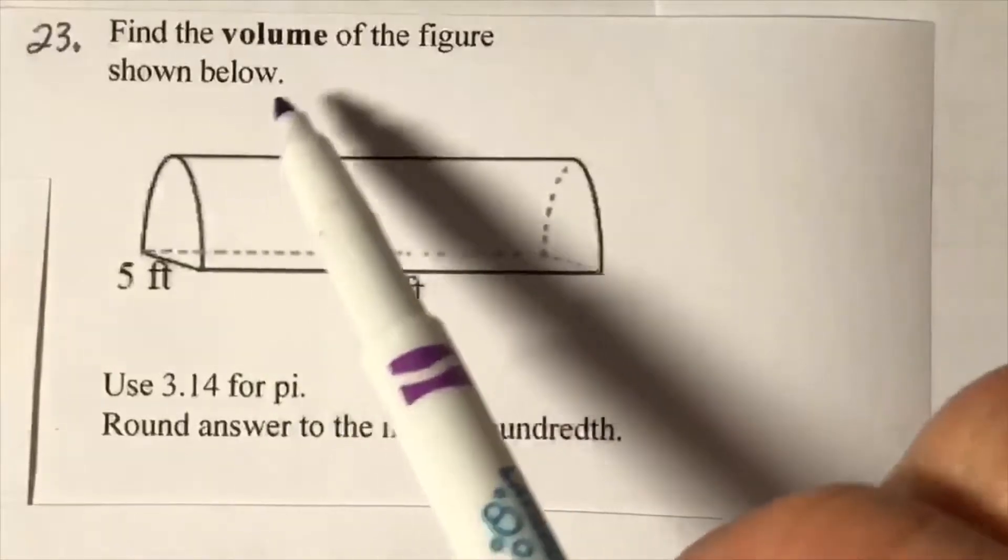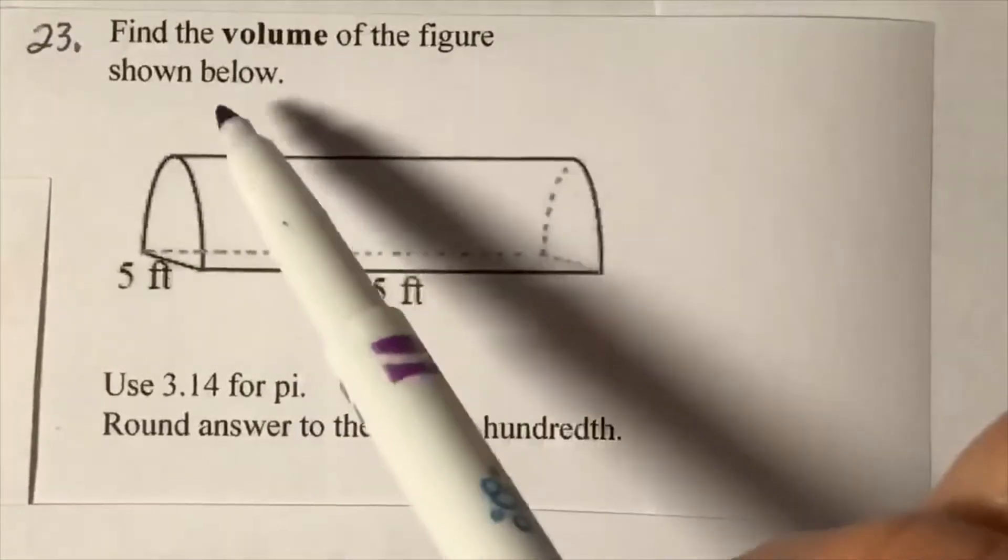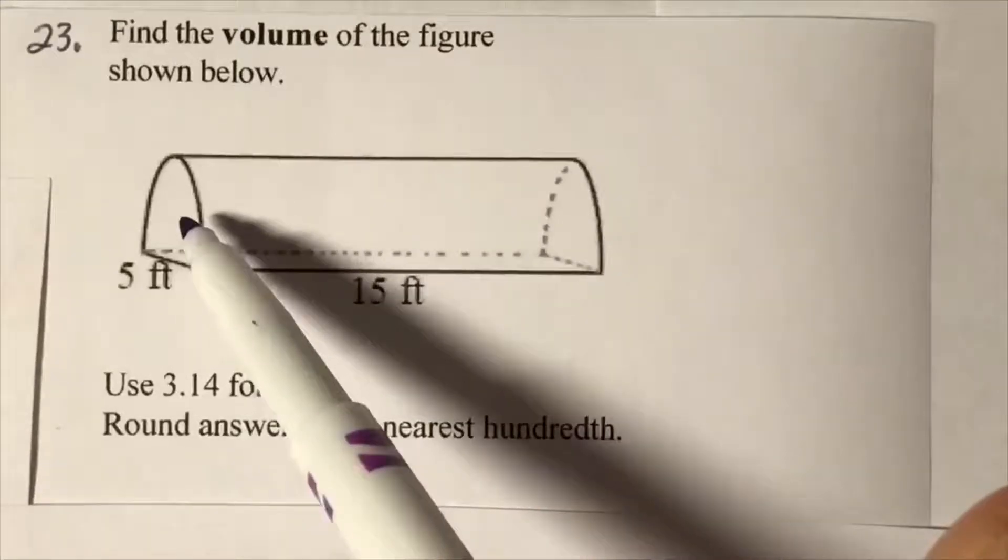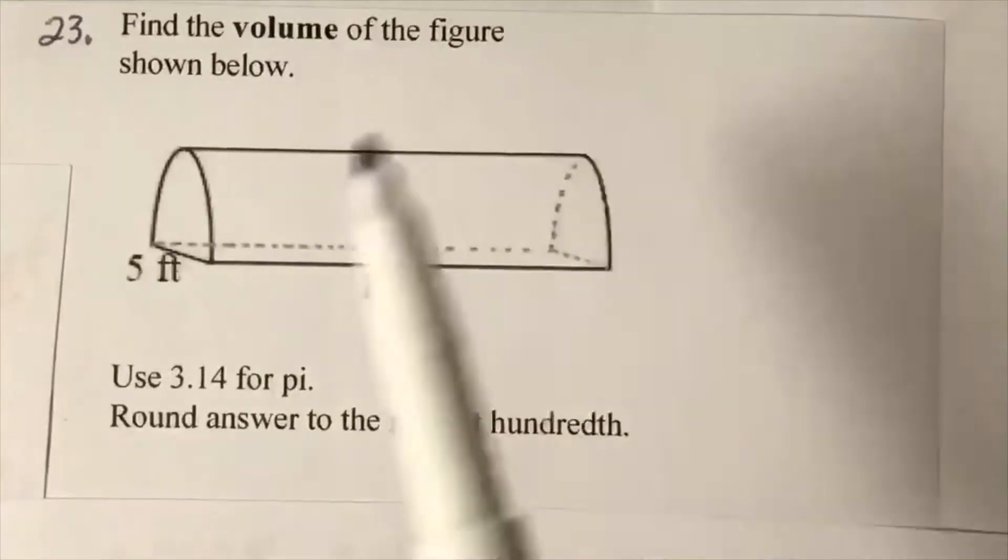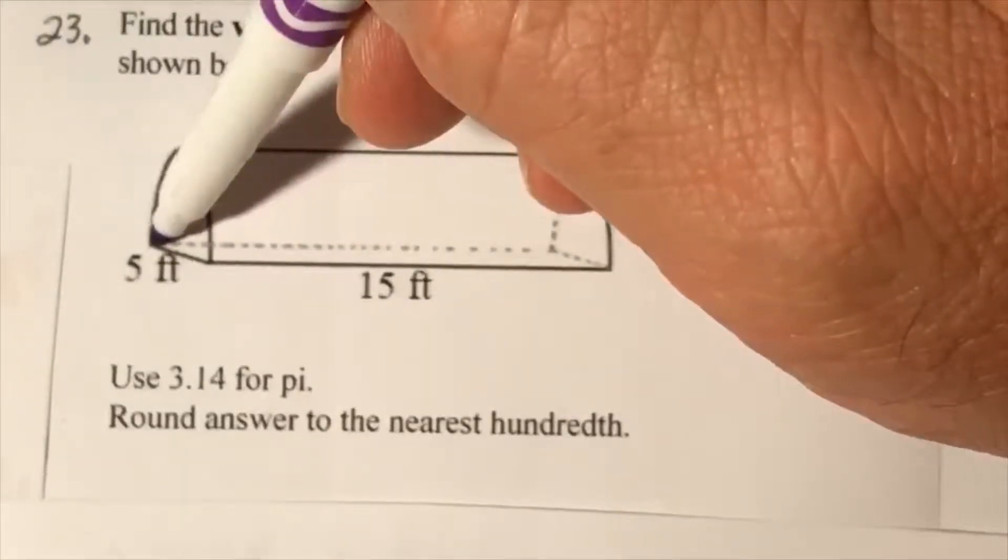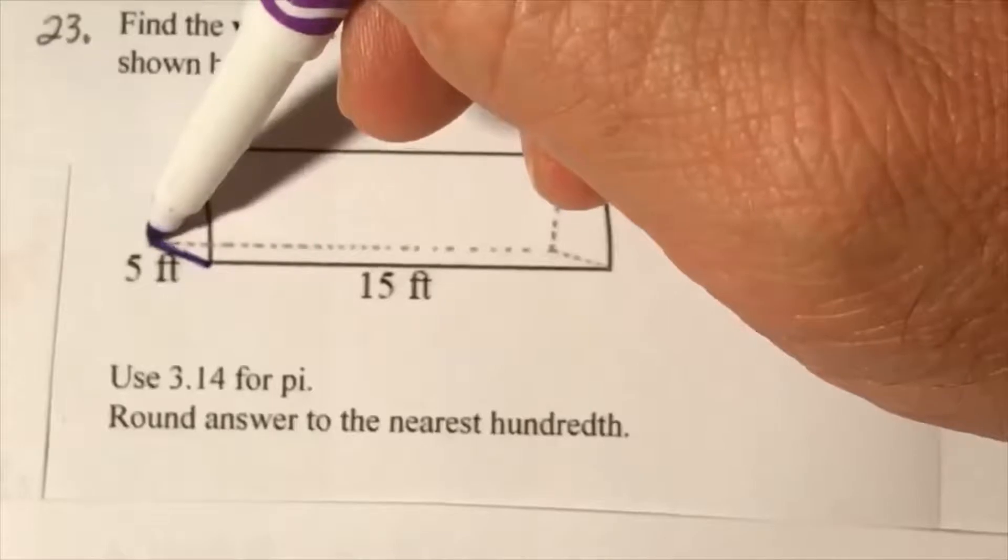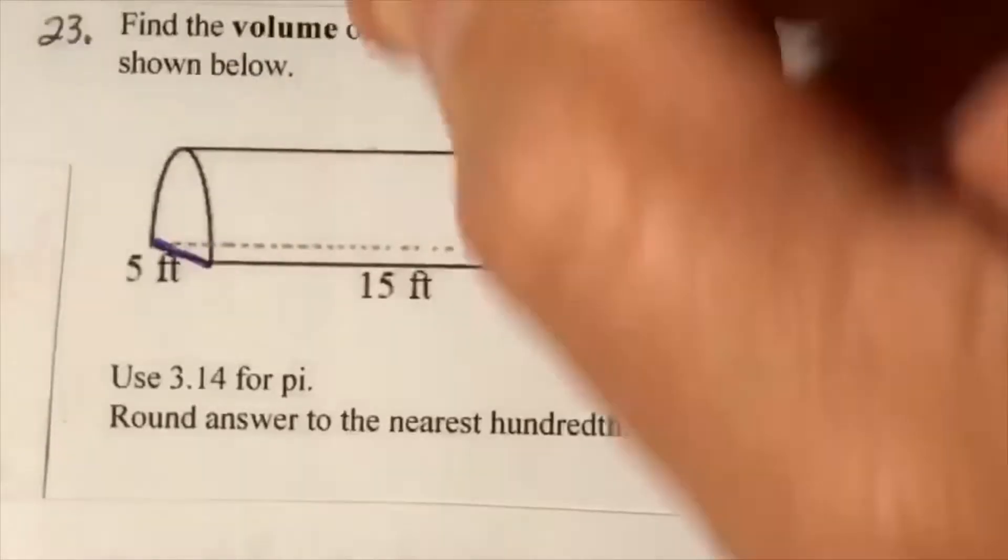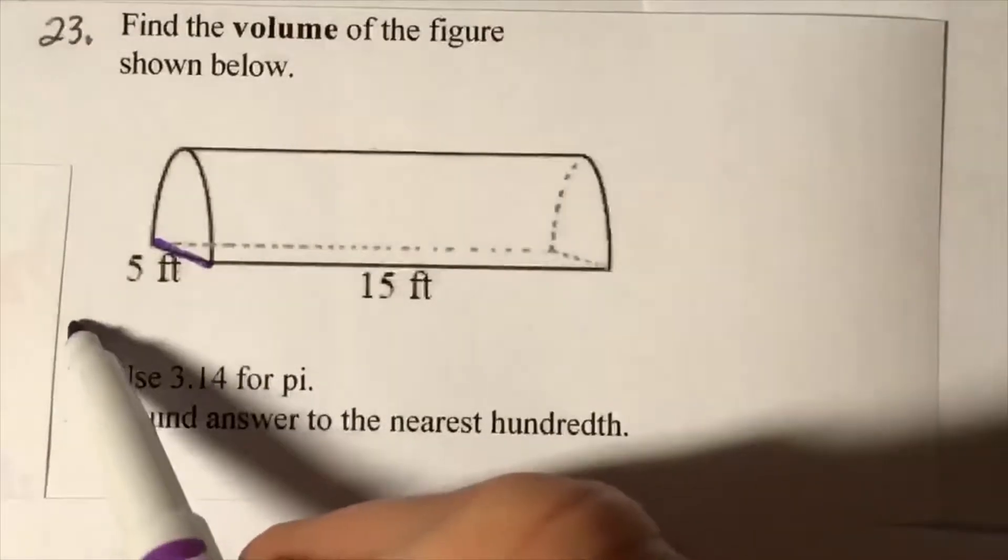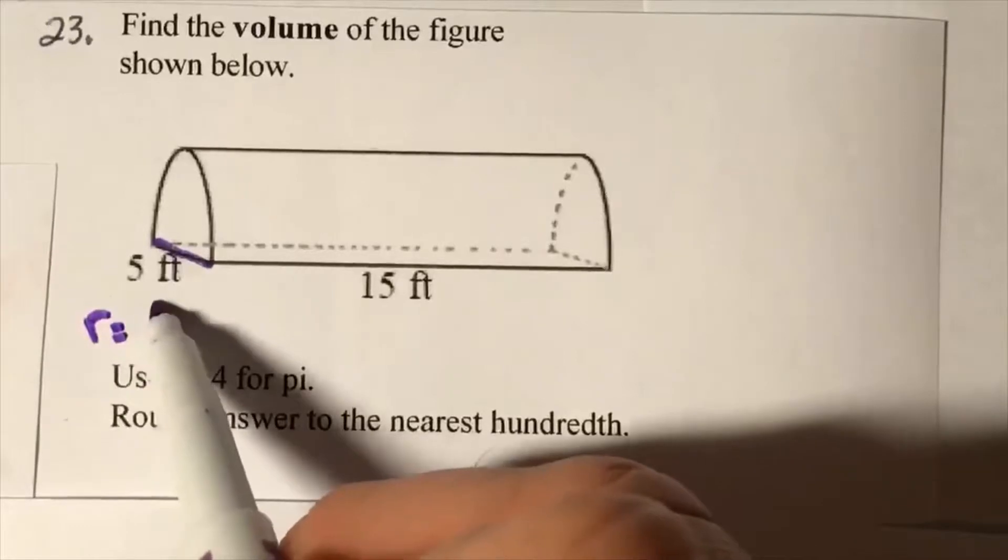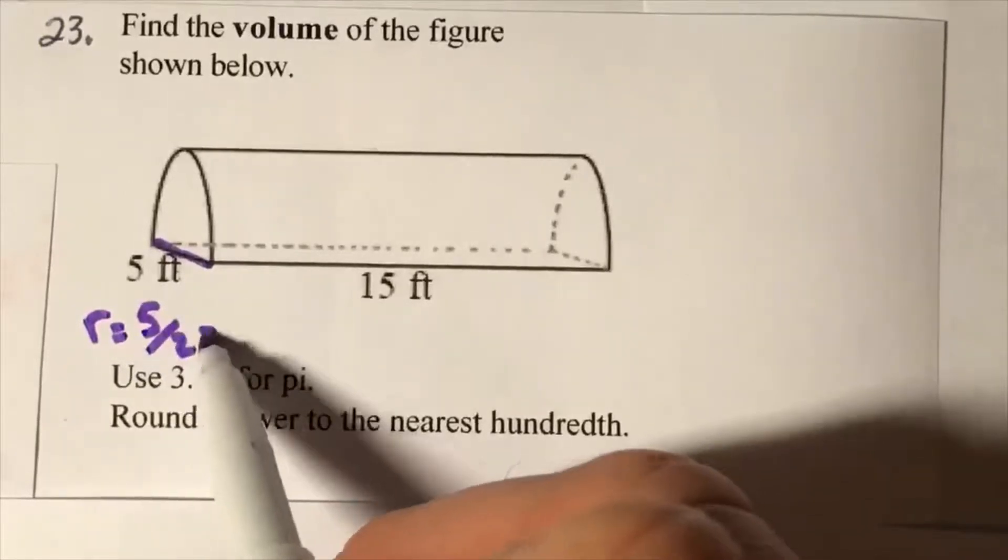To find the volume of the figure shown below, you should be seeing a half cylinder right here. This 5 goes from one point of the circle all the way across and that's going to represent the diameter. So we've got to find the radius.